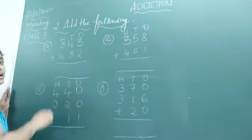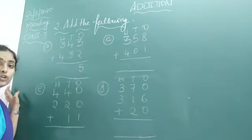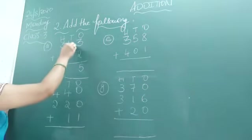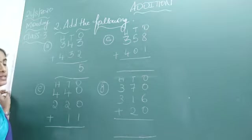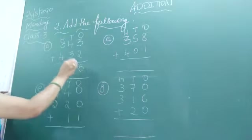Then add these two numbers. 3 plus 2 is how much? 5. Next, add tens place. 4 plus 3 is how much? 7.